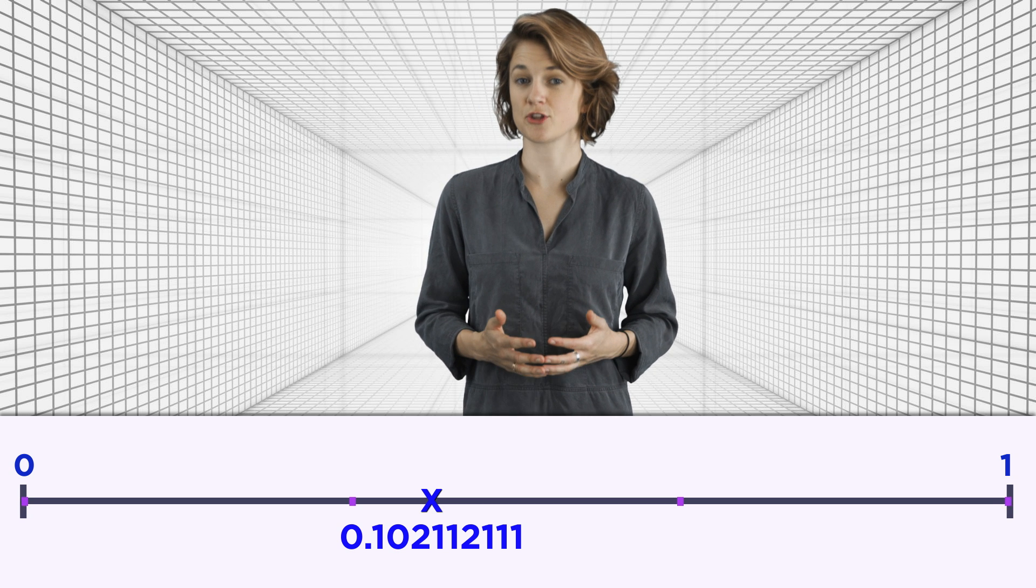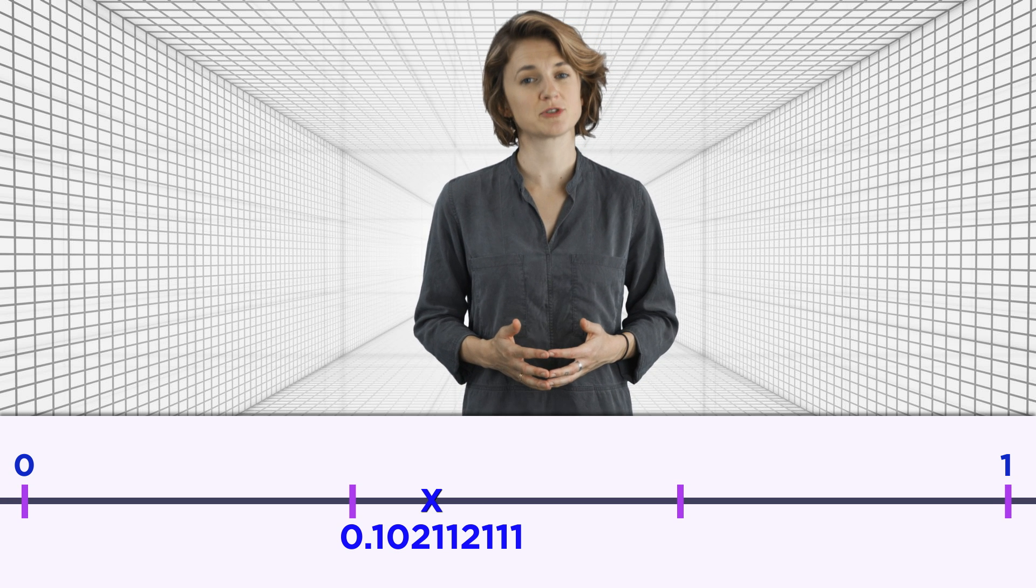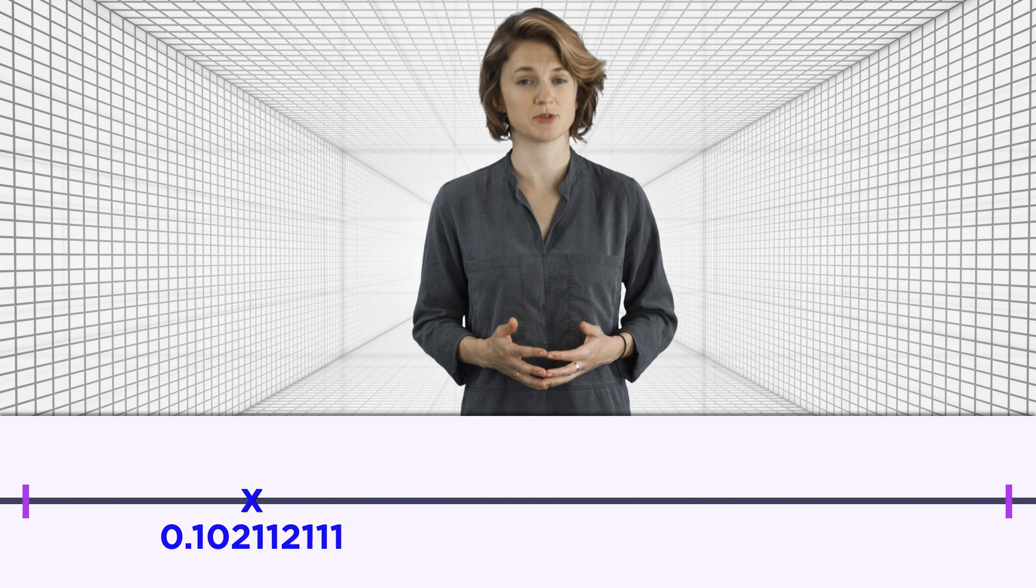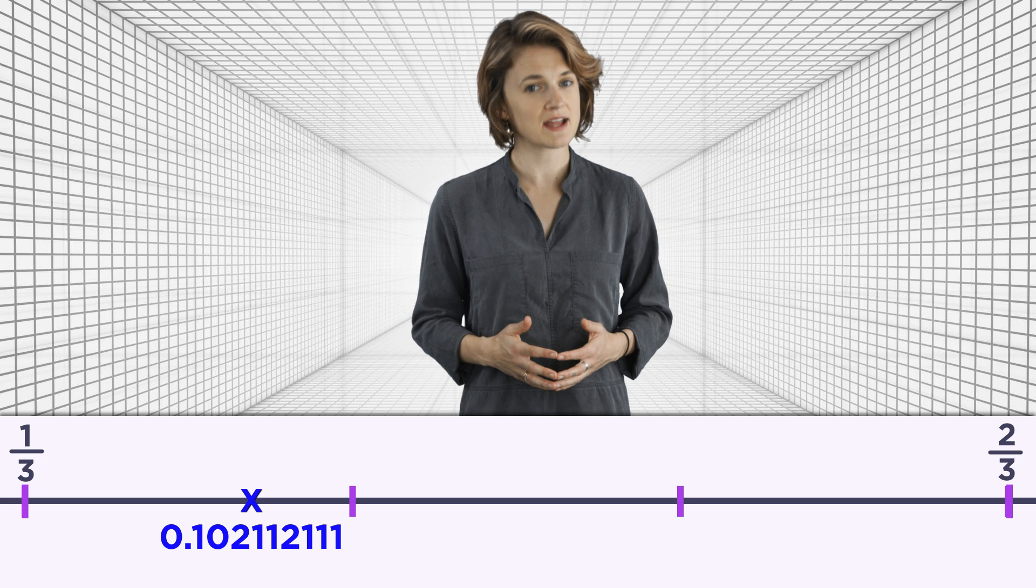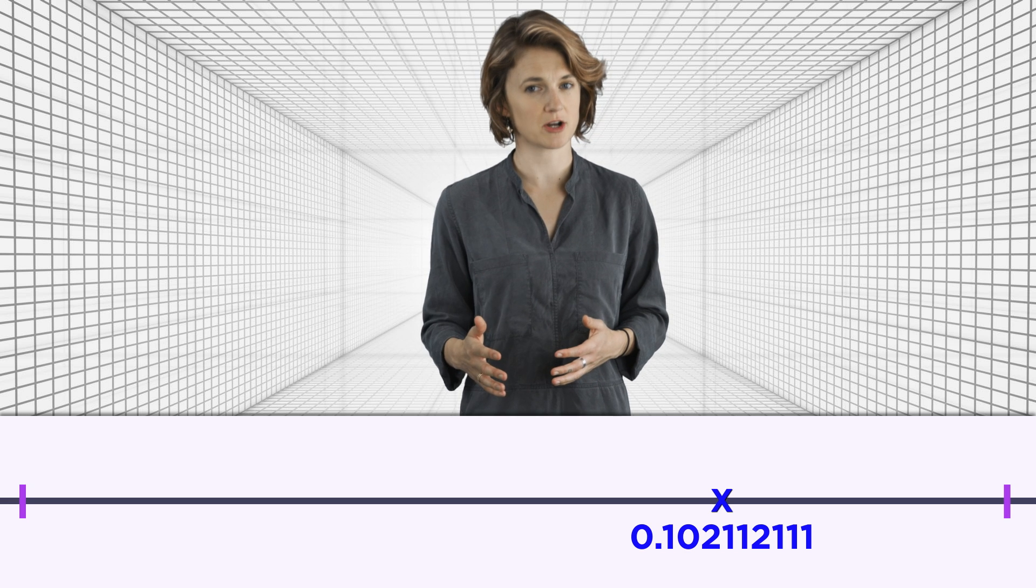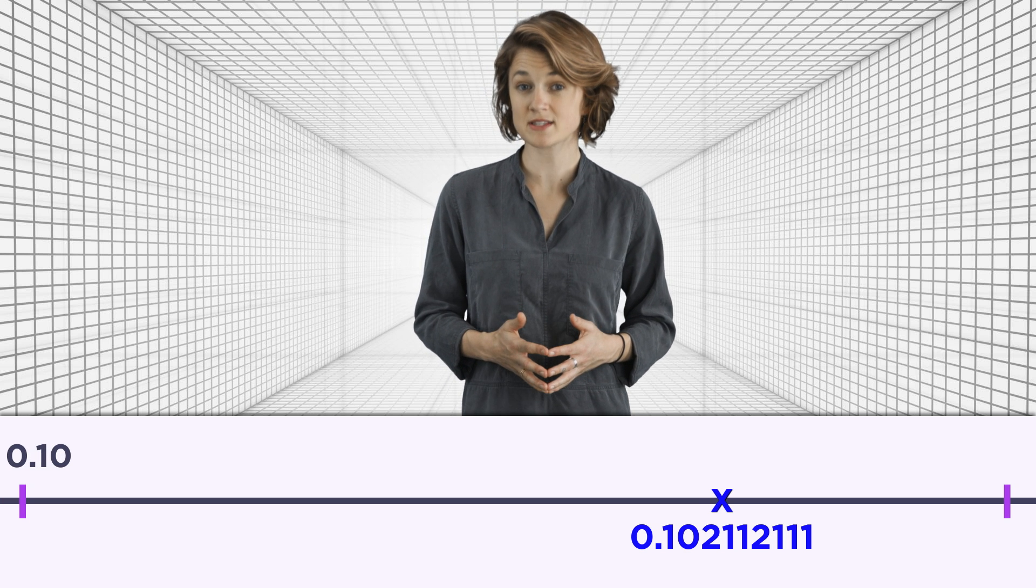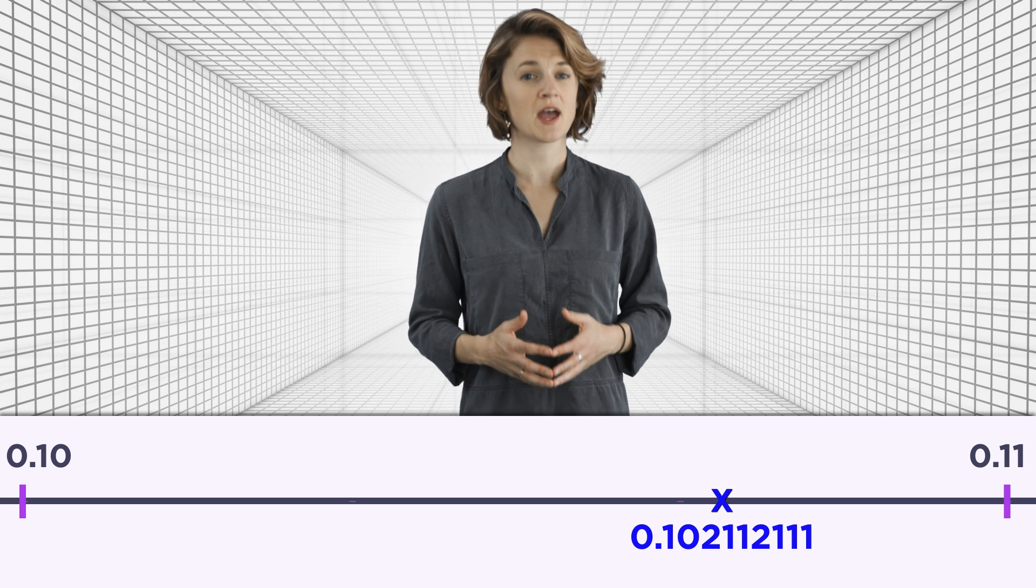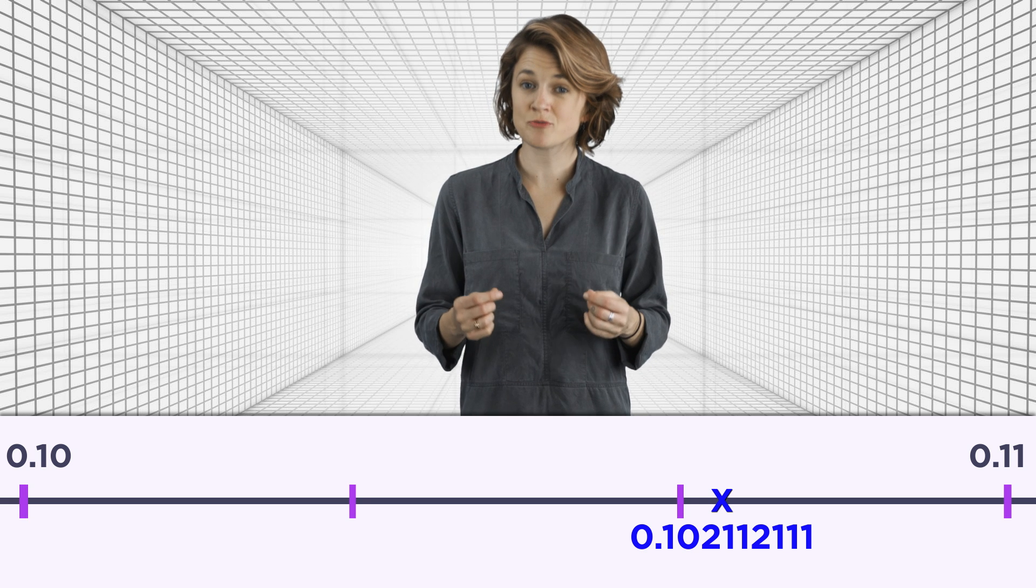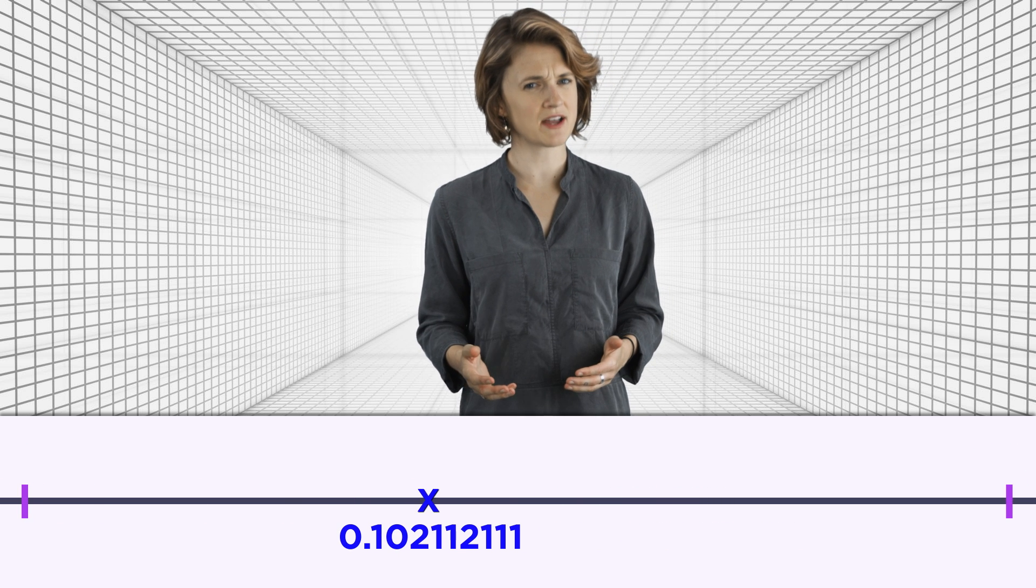Divide the interval into three pieces, then look between the first and the second mark, between 1/3 and 2/3. Divide that into three pieces, then look between the zeroth and first mark, between 0.10 and 0.11. Again, you can keep zooming in that way and you'll eventually find the point.